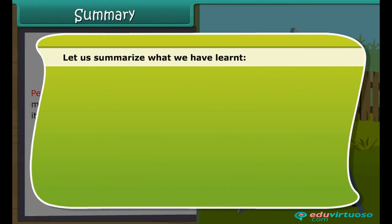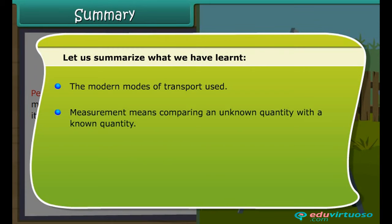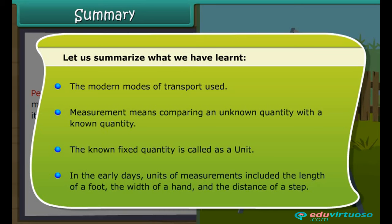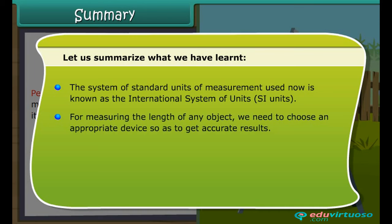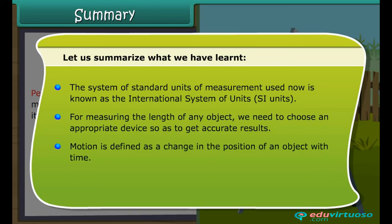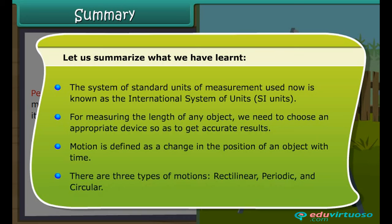Let us summarize what we have learnt. The modern modes of transport are used today. Measurement means comparing an unknown quantity with a known quantity. The known fixed quantity is called a unit. In the early days, units of measurements included the length of a foot, the width of a hand, and the distance of a step. The system of standard units used now is known as the International System of Units or SI Units. For measuring the length of any object, we need to choose an appropriate device to get accurate results. Motion is defined as a change in the position of an object with time. There are three types of motions: rectilinear, periodic, and circular.